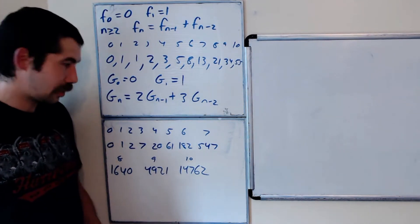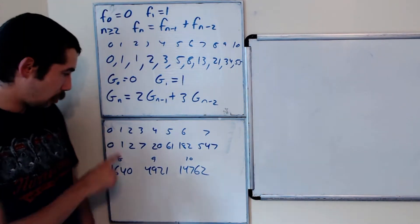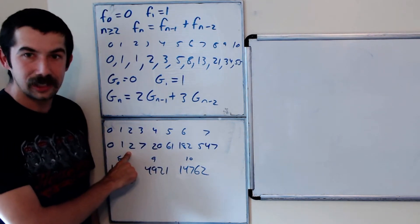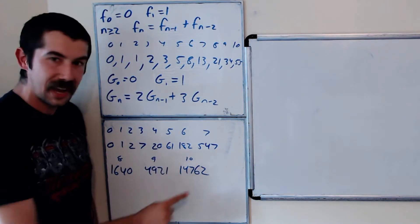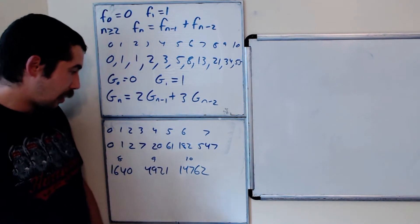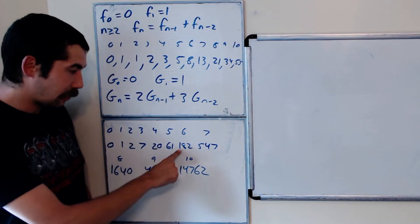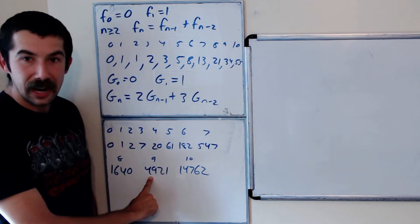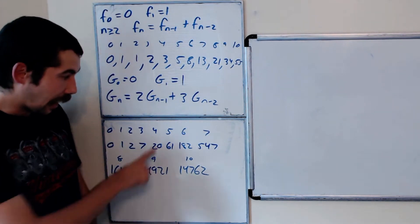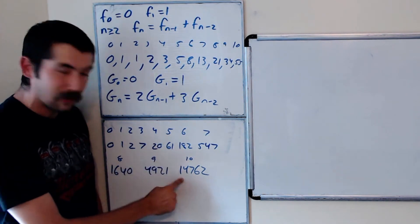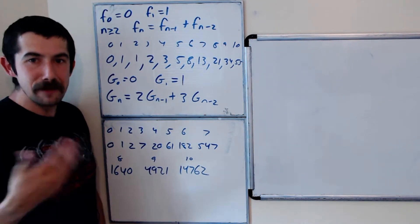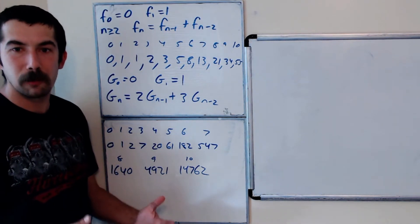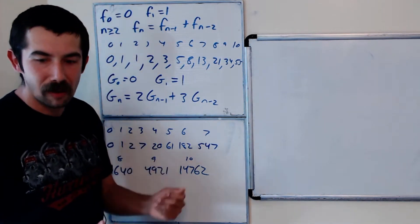Here are the first 10 terms in the G sequence. The 2nd G number divides the 4th, 6th, 8th, and 10th G numbers. The 3rd G number is 7, and that divides 182. It also divides 49. And the 5th G number, 61, divides the 10th G number. So something is going on here with this type of recursion, and to generalize these, we're going to use what's known as the Lucas polynomials.